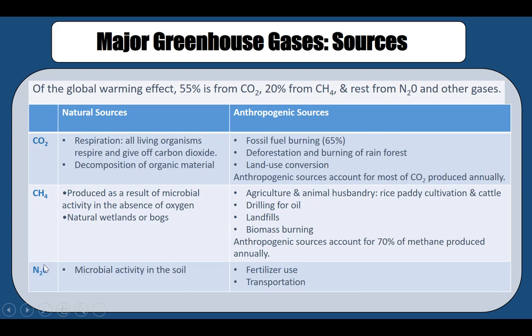Each of these gases has a natural source and an anthropogenic source. For carbon dioxide, the natural sources are respiration — all living organisms respire and give off carbon dioxide — and decomposition, which also produces carbon dioxide. On the other hand, burning of fossil fuels produces a lot of greenhouse gases; about 65% of all greenhouse gases come from fossil fuel burning.